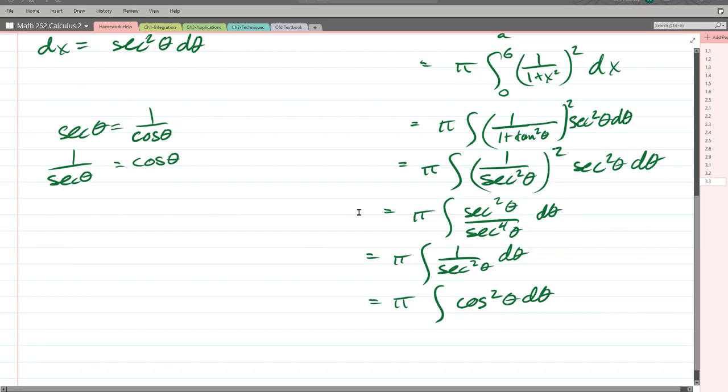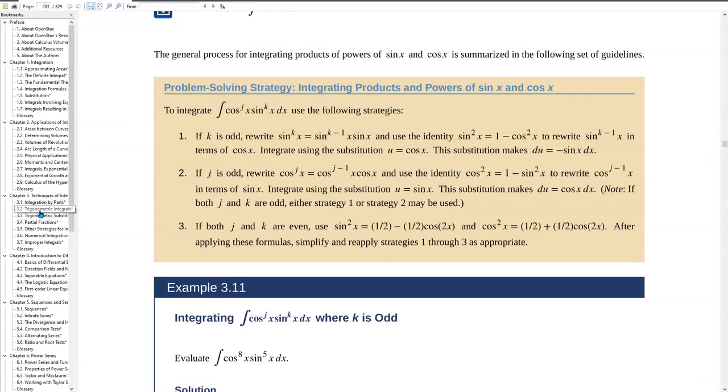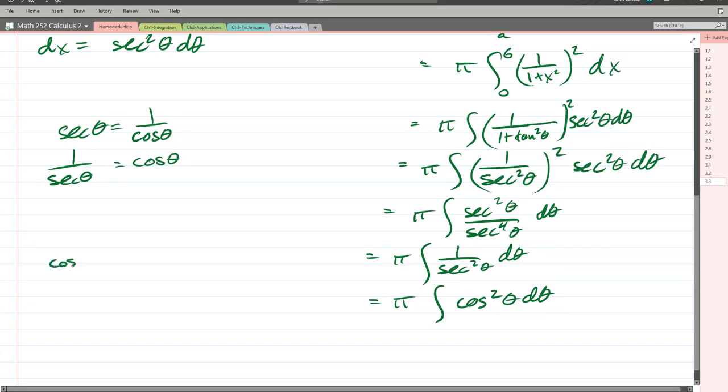So this is a trig integral right here. And this is to integrate any cosine times sine to different powers. We have no odd powers. So we're down here in step three. So we rewrite sine squared and cosine squared. We only have a cosine squared. So we're only going to use this right here. So I'm only going to write that substitution down here.